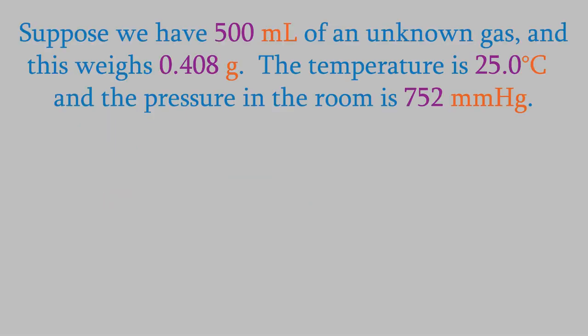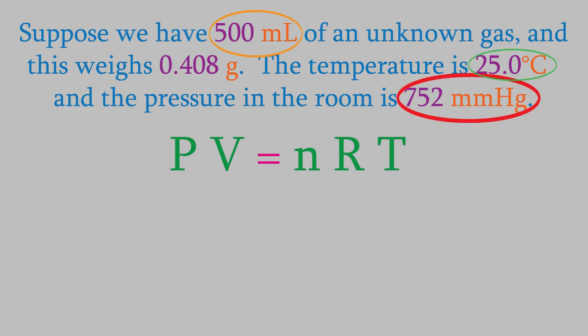Suppose we have 500 milliliters of an unknown gas, and it weighs 0.408 grams. The temperature in the room is 25 degrees Celsius, and the pressure is 752 millimeters of mercury. With that information, we can figure out what the gas actually is. Here's how we do that. If you look at the ideal gas law, you'll see that we know P, V, and T. So we can use the equation to solve for N, the number of moles. Let's do that. We'll convert P to atmospheres, V to liters, and T to kelvin.